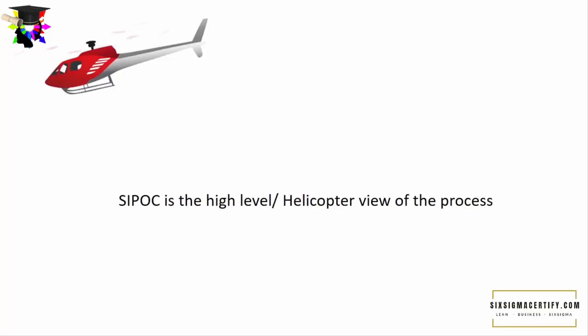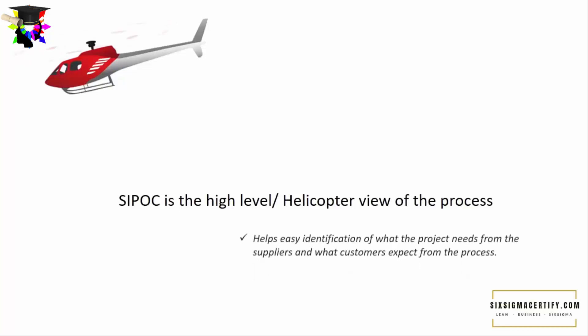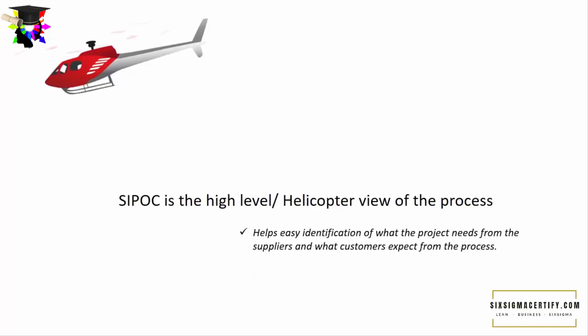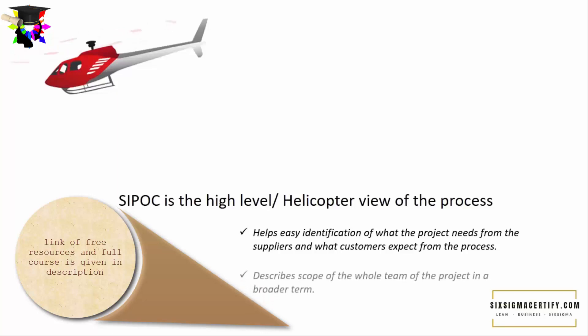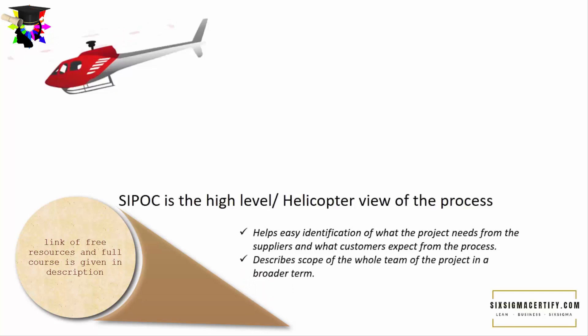If it is SIPOC of the company, we get the glance of the company. If it is SIPOC of a certain process, then we get a glance of that particular process. Generally, SIPOC is used for the improvement of certain processes inside the company. SIPOC helps in easy identification of what the project needs from the suppliers and what customers expect from the processes. SIPOC describes the scope of the whole team of the project in broader terms and helps in easy identification of the gaps in the project.